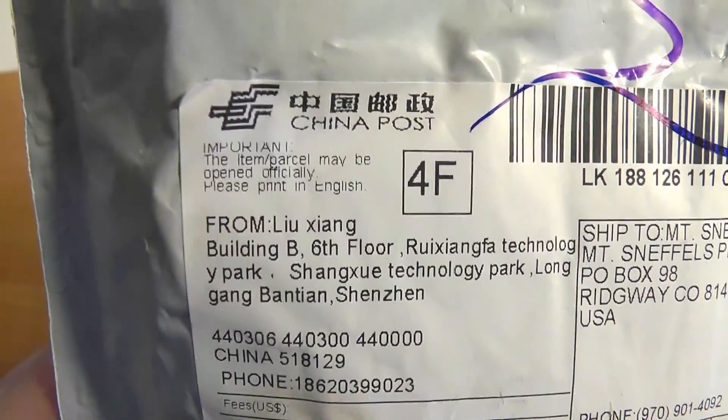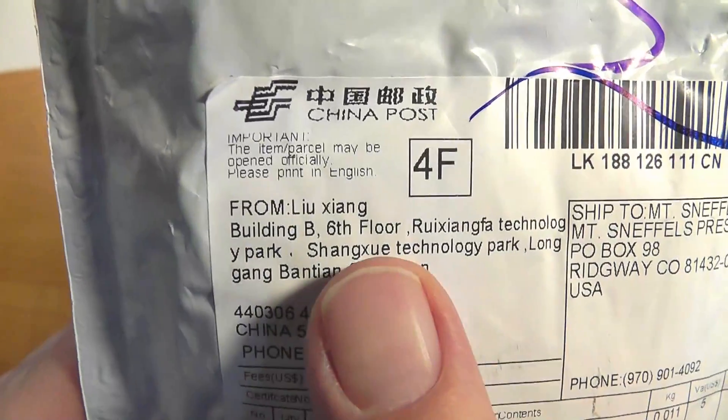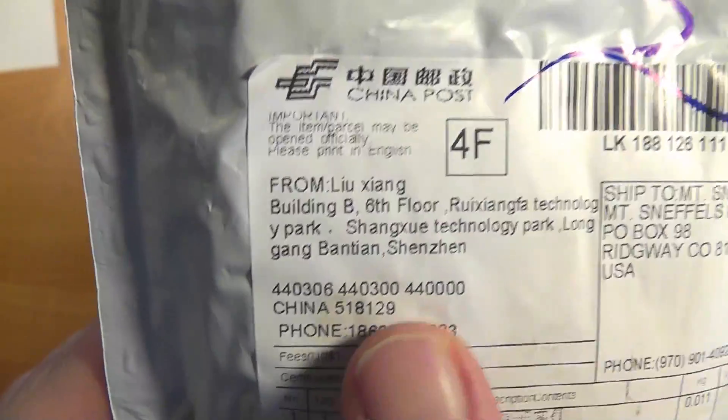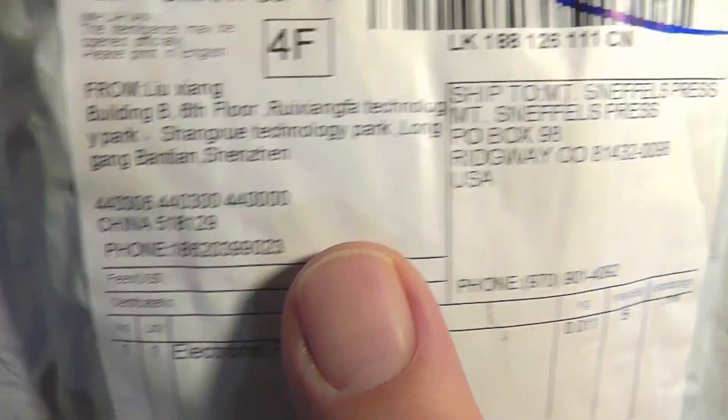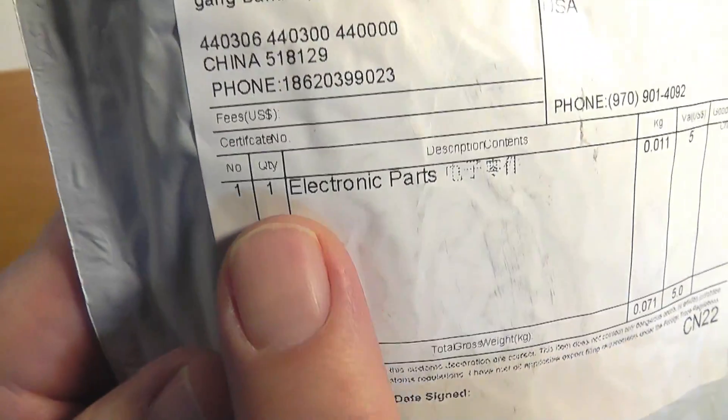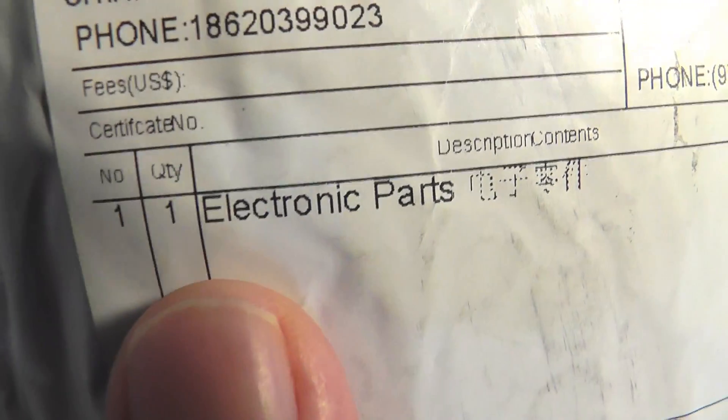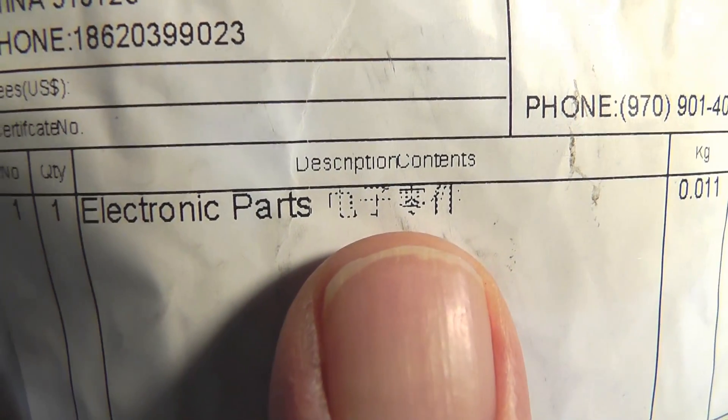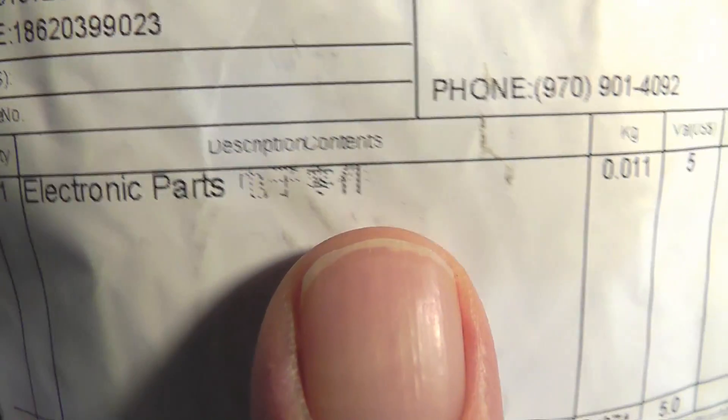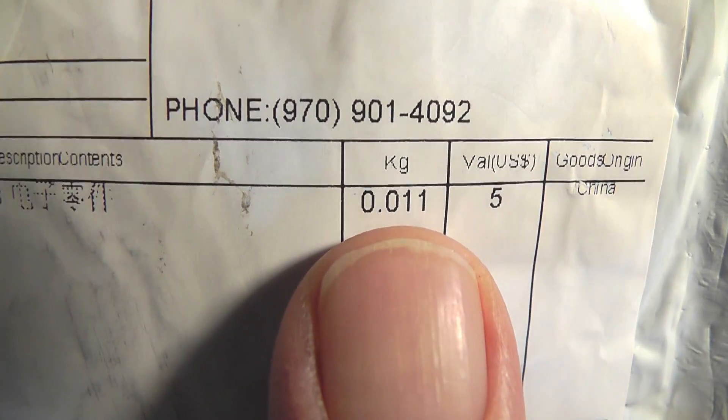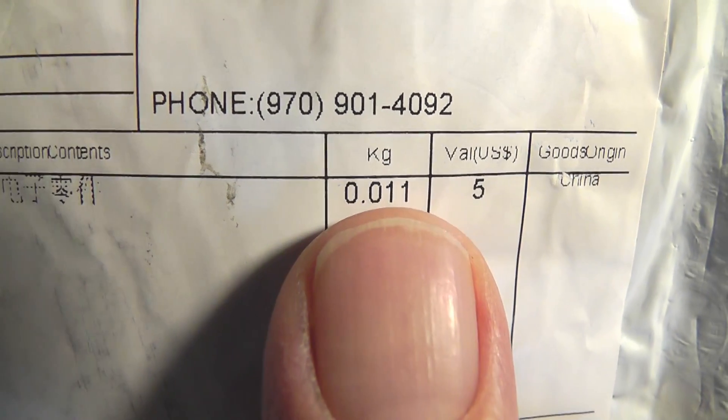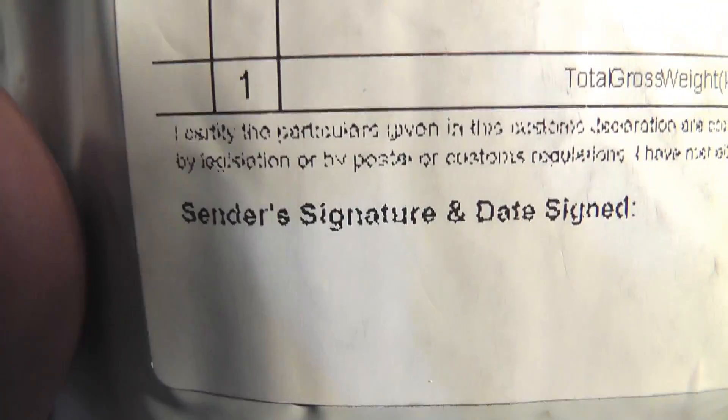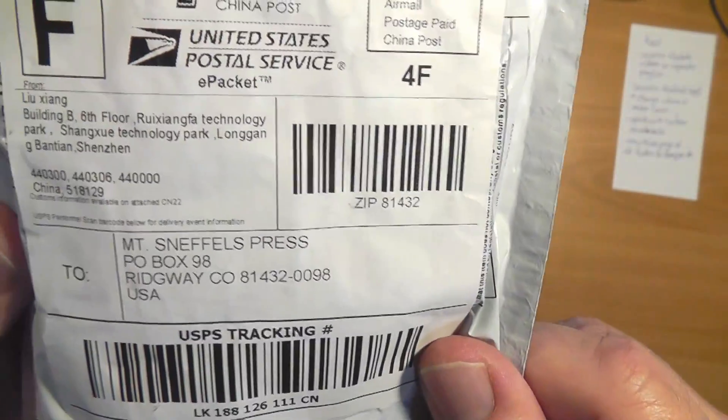It has a USPS tracking number that's a little different from the normal tracking number, but this allows it to be tracked inside the United States. Over here we see the Customs Declaration. It tells where it's from, Building B, sixth floor. Then this is the Customs form, Electronic Parts. It's barely more than a few grams, about 11 grams. The value, US dollars five. I actually paid seven something for it. And the sender's signature never got done, and no one seemed to care. So this came straight through like this.